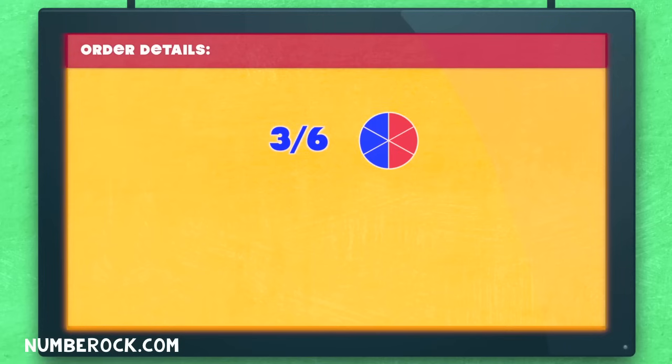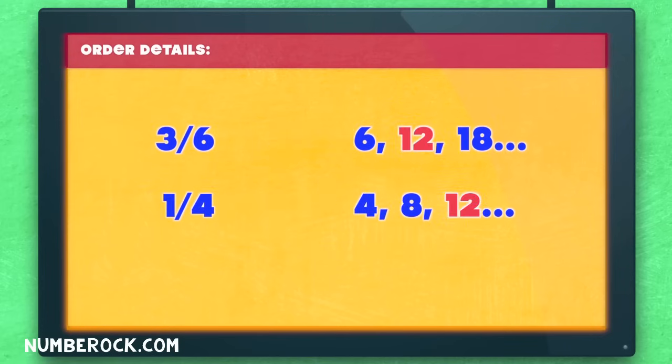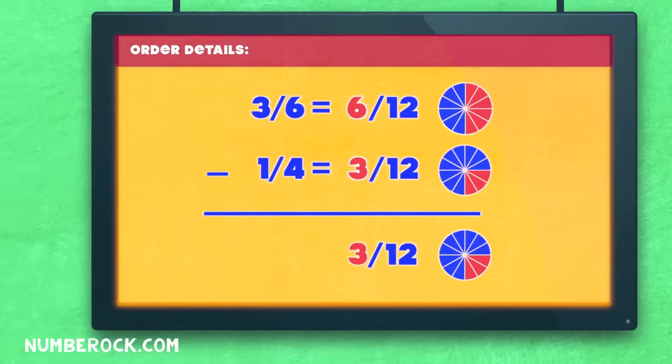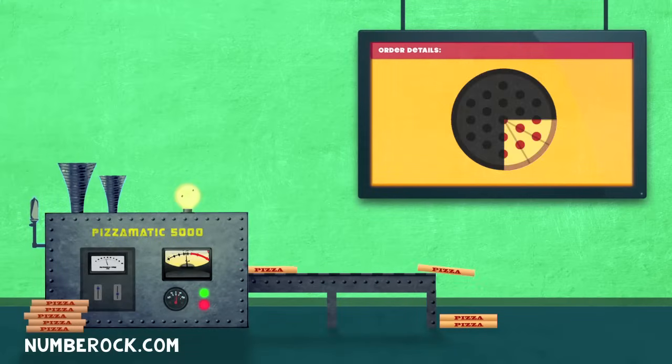Three-sixths of a pizza minus one-fourth. Find the LCM, which is twelve of course. Twelve is the least common denominator. Make equivalent fractions: six-twelfths and three-twelfths, then do the subtraction. Six minus three is three. Three-twelfths of a pizza at the pizzeria.